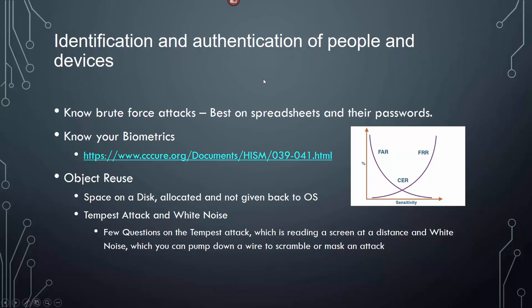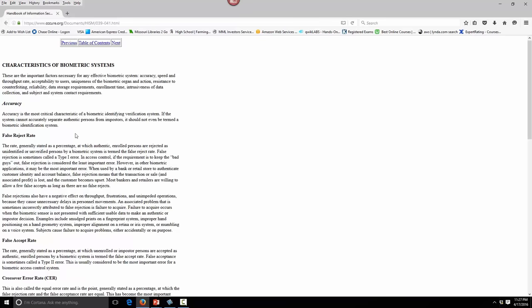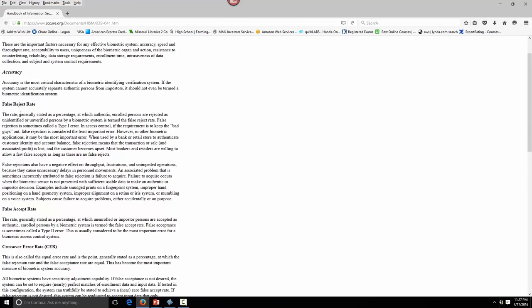For identification and authentication: know your brute force attacks. If you get questions about cracking a spreadsheet with a big log password, that's it. Know your biometrics — CCQR has a really good biometrics detail. Accuracy is the most critical component of the biometric system. Your false reject rate versus false accept rate — you have to memorize these because they will be on the test. Your crossover error rate (CER): the lower it gets, the better. You basically adjust it until it's only picking up people that it should.